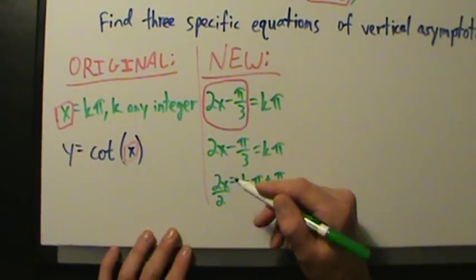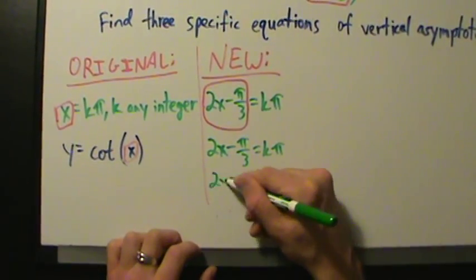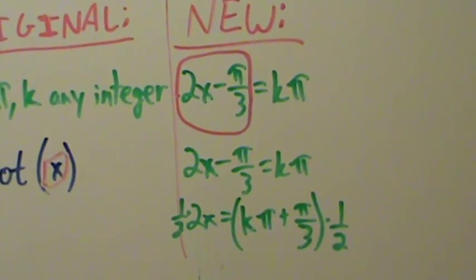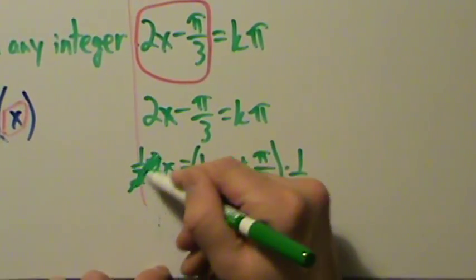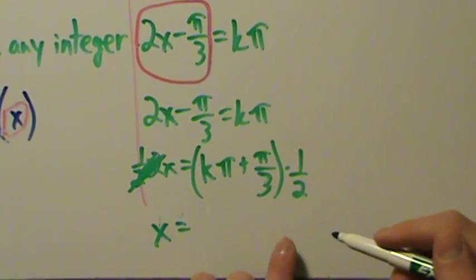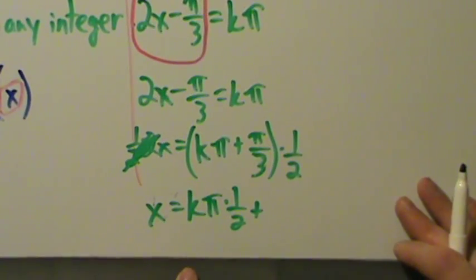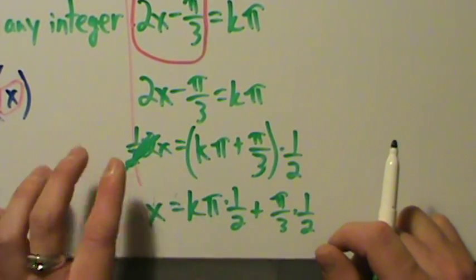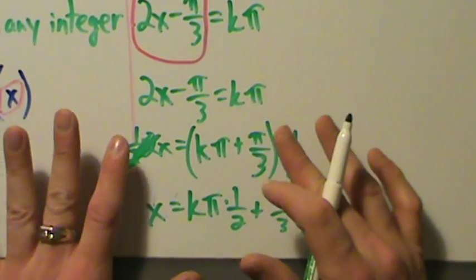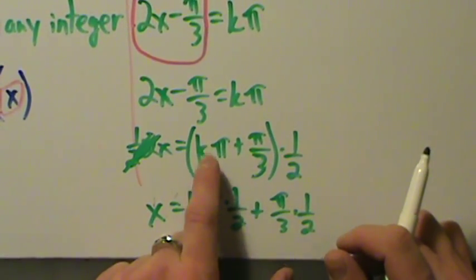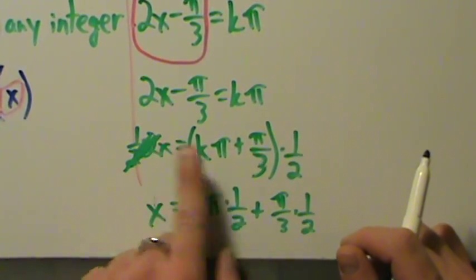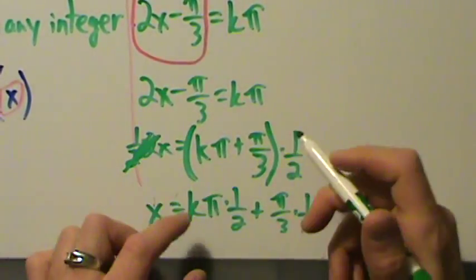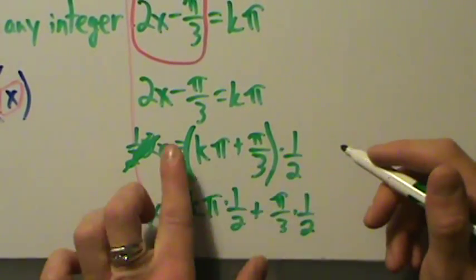So divide everything by 2 — or multiply both sides by 1/2. The 2s cancel on the left, leaving x. On the right, distribute the 1/2: k pi times 1/2 plus pi over 3 times 1/2. Be careful to multiply everything by the half, including the term with k. That gives x equals k pi over 2 plus pi over 6.